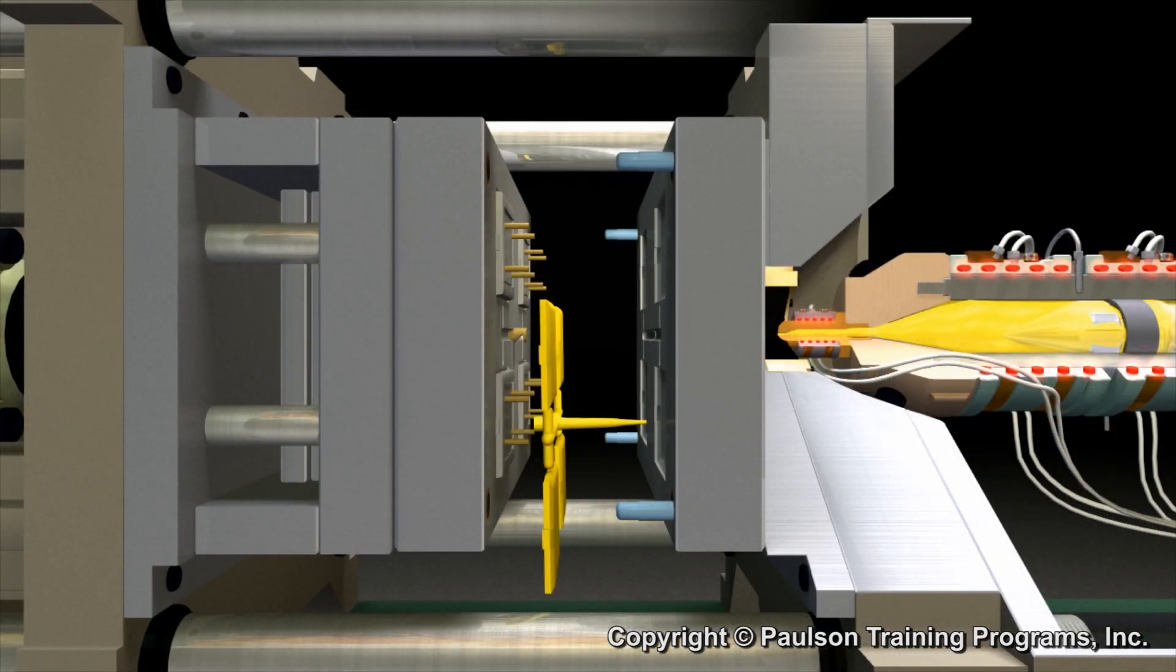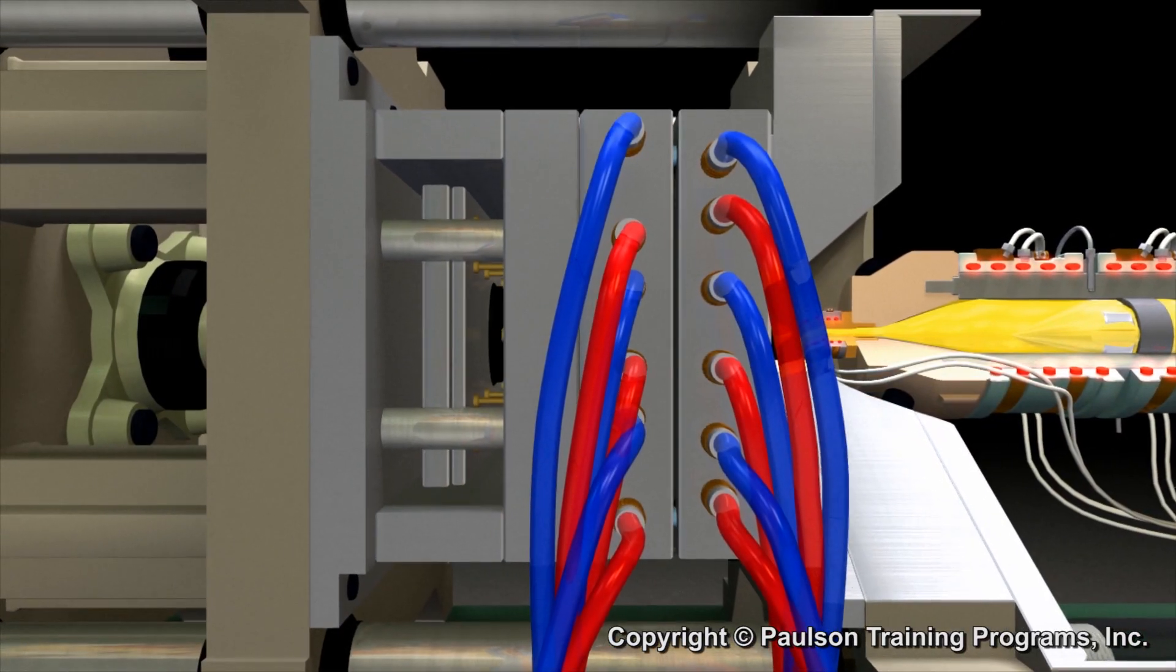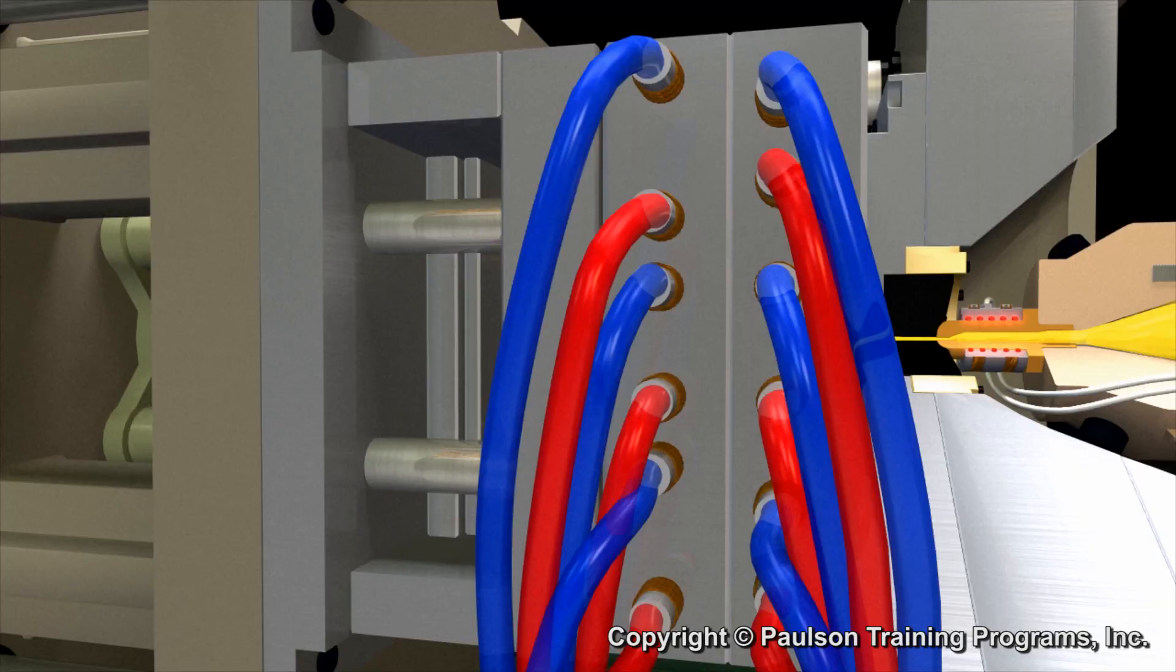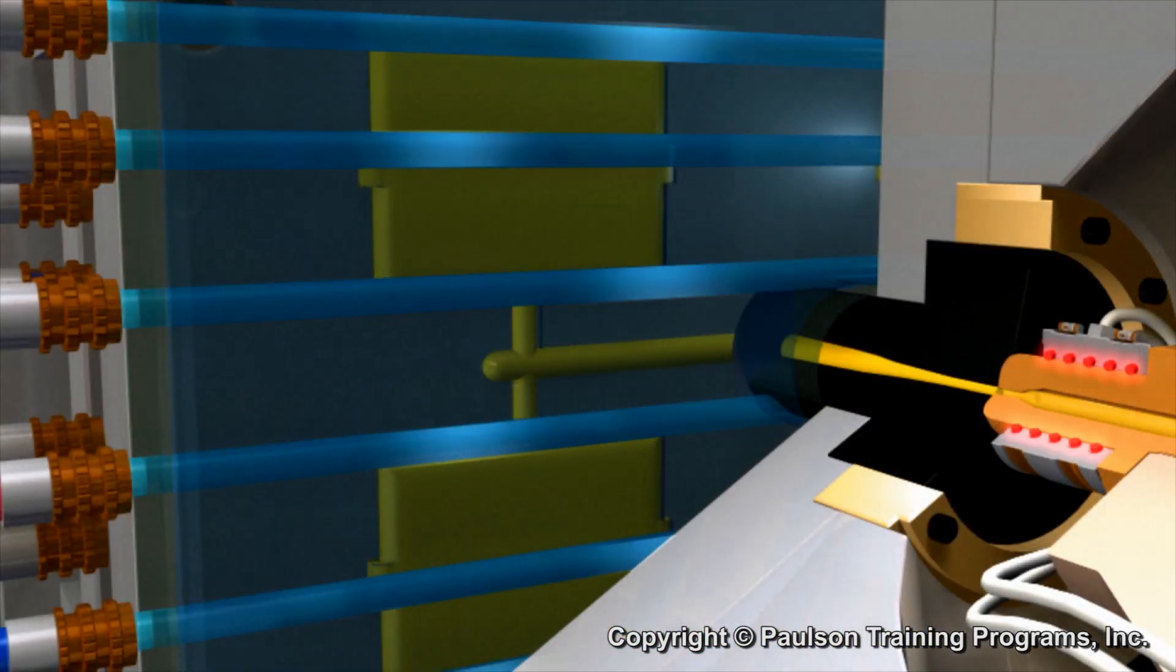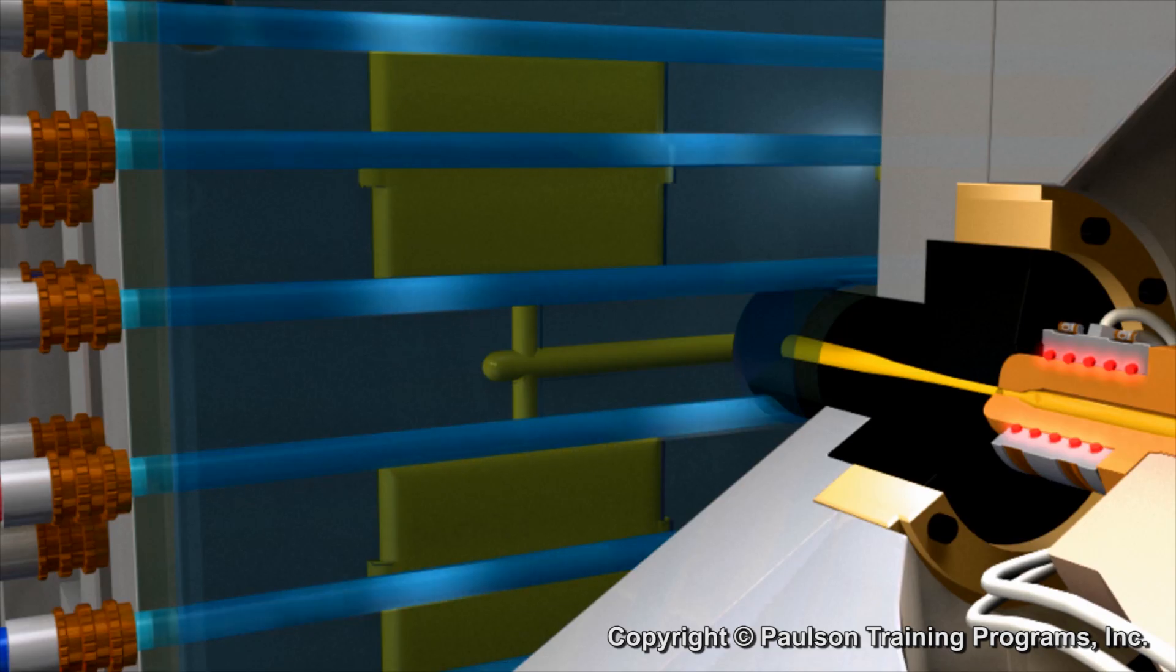A mold also has coolant passages to control its temperature. A liquid, usually water, is circulated through these passages to take away the heat given off by the plastic.